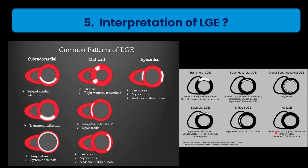Peripartum cardiomyopathy is something we occasionally see — in a pregnant patient with severe cardiomyopathy, when you give contrast there may be no enhancement at all. Please do not report this as absence of myocarditis. If there is a regional wall motion abnormality even without enhancement, as can be seen in peripartum cardiomyopathy, they also have regional wall motion abnormalities.